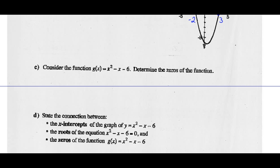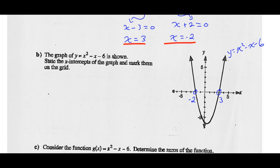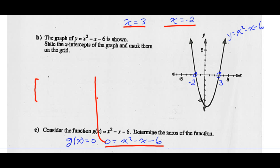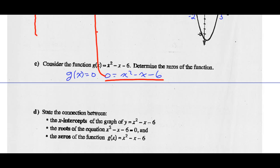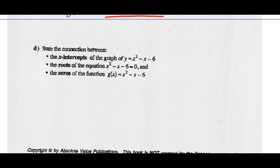Consider the function g(x) = x² - x - 6. Determine the zeros of the function. To find the zeros of the function, we let g(x) = 0. So 0 = x² - x - 6 — we just solved that equation above. The zero of the quadratic function is the same as the solutions to the equation; it's the same as the x-intercepts of the function. The x-intercepts of the graph, the roots of the equation, and the zeros of the function are all the same.